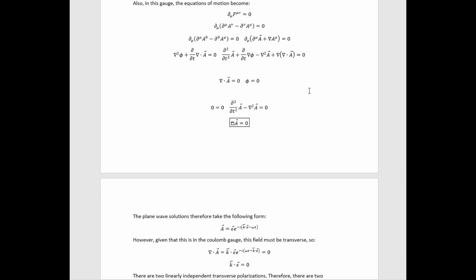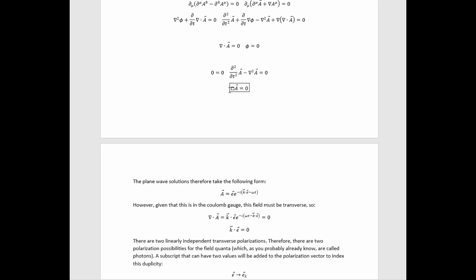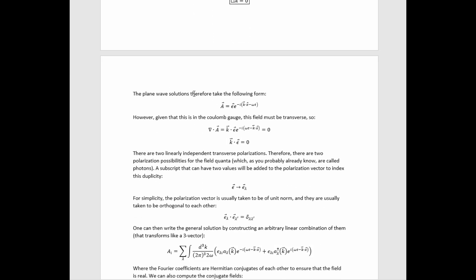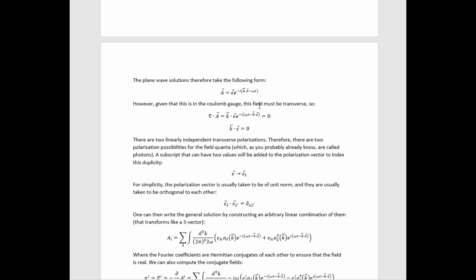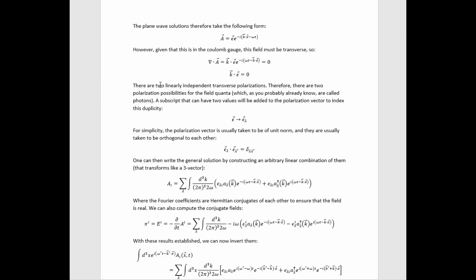Now if we look at the equations of motion and expand them taking into account the gauge, we find that the equations of motion are just the wave equation. That means we can write plane wave solutions of the form with ε as the polarization vector. However, given that this is in the Coulomb gauge, the field must be transverse. So if we apply the divergence to the field and plug in the plane wave, we find that k·ε equals zero — the transversality condition. There are two linearly independent transverse polarizations, giving two polarization possibilities for the field quanta, which are called photons — basically two spin states.